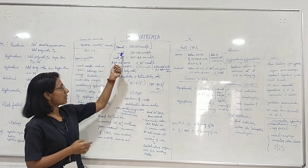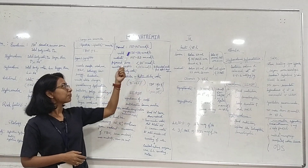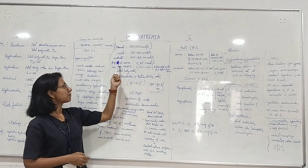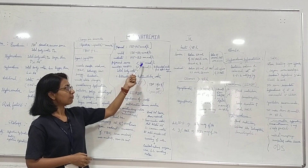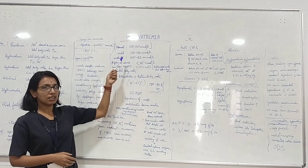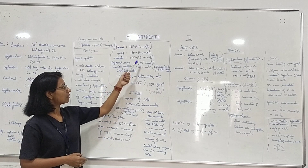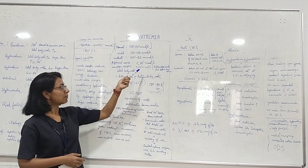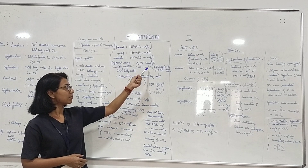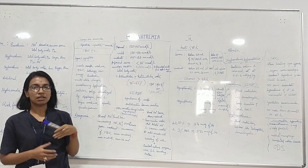Mild hyponatremia ranges between 132–134 millimole per litre, moderate is 125–129 millimole per litre, and profound severe is below 125 millimole per litre. Based on the severity we start the treatment. When the serum sodium level drops below 115 millimole per litre, that is the point when the patient will start showing neurological symptoms.